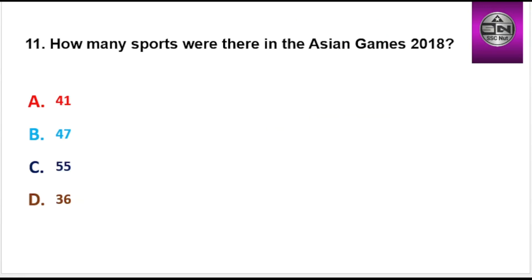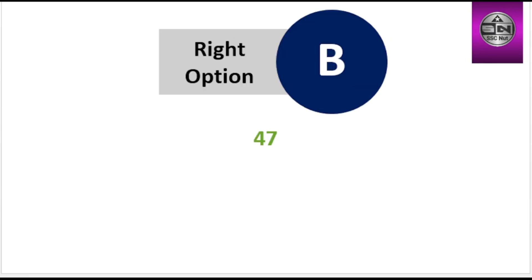Next question: How many sports were there in the Asian Games 2018? Options are 41, 47, 55, 36. Right option is B: 47.